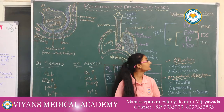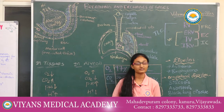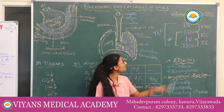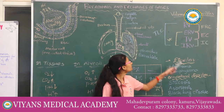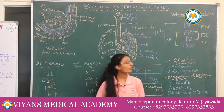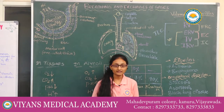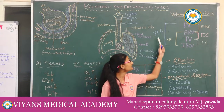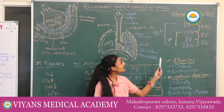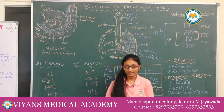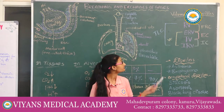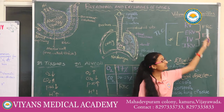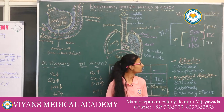Vital Capacity (VC): the volume of air that can be maximally expired after a forcible inspiration. TLC (Total Lung Capacity): the total volume of air in the lungs after forcible inspiration. These capacities and volumes are measured by an instrument known as a spirometer, but TLC and FRC cannot be measured with that instrument — please remember that.